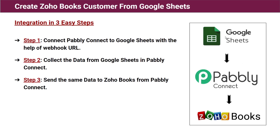These are the steps I followed to create the workflow between Google Sheets and Zoho Books. Step 1: Connect Pabbly Connect to Google Sheets with the help of a Webhook URL — first we log in to Pabbly Connect and connect Google Sheets using the Webhook URL address provided. Step 2: Collect the data from Google Sheets in Pabbly Connect — whenever we enter any data in Google Sheets, it will automatically be captured by Pabbly Connect. Step 3: Send the same data to Zoho Books from Pabbly Connect.